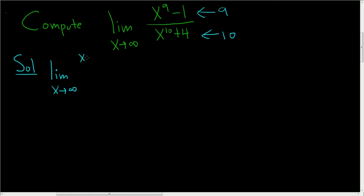So you'll have x to the 9th minus 1 over x to the 10th, and then here you have x to the 10th. And on the bottom, you have the same thing. You have x to the 10th over x to the 10th plus 4 over x to the 10th. You might say, why can you do that?